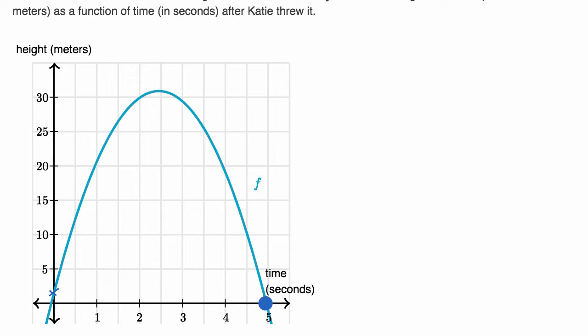And then after a little under two and a half seconds, the ball starts going down. And by the time you get to five seconds or close to five seconds, it looks like the ball is on the ground. Its height is zero meters.